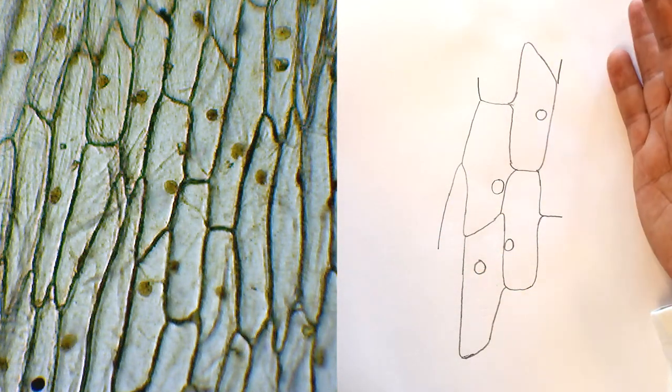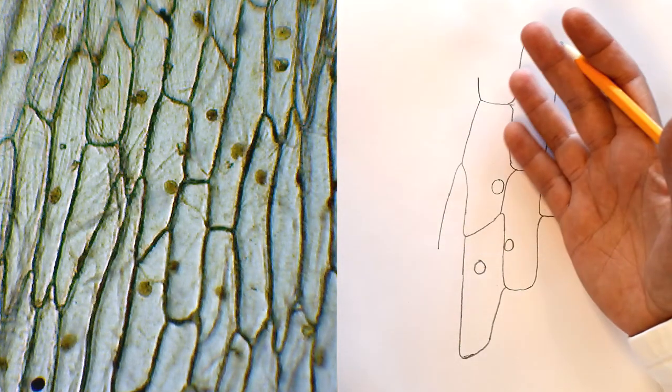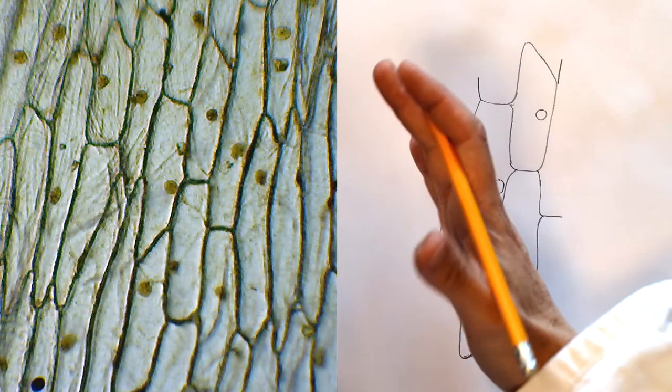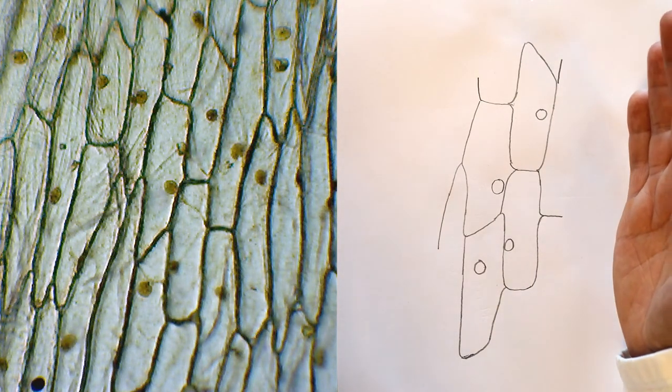I can't see the double cell walls. I can't see the cytoplasm. All I can see are the nucleuses and the cell walls. That is sufficient. That actually is a good biological drawing.